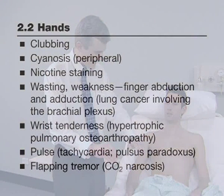Look for clubbing, peripheral cyanosis, and tar staining. Squeeze the wrist to detect the tenderness of hypertrophic pulmonary osteoarthropathy.